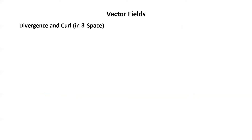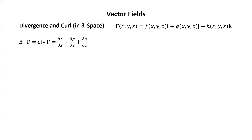Divergence and curl in three-dimensional space. We start with a vector field whose inputs are points in three space with three coordinates, and outputs are vectors in three space with three components: little f, little g, and little h. First, the divergence of F — there are two notations: del dot F, or div(F). That equals the partial of little f with respect to x, plus the partial of little g with respect to y, plus the partial of little h with respect to z.